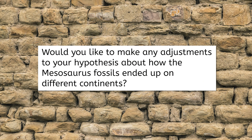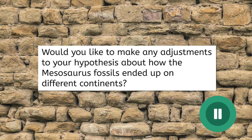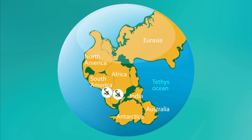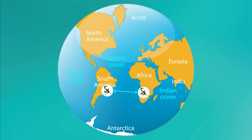For example, geologists estimate that the continents will eventually migrate back together, but not for another 250 million years. Given everything we've learned, would you like to make any adjustments to your hypothesis about how the Mesosaurus fossils ended up on different continents? Pause the video and record your thoughts in your notes. Based on all the evidence we've gathered, the two groups of Mesosaurus fossils were very likely the same population around 250 million years ago, before they were split apart by tectonic plate movement.